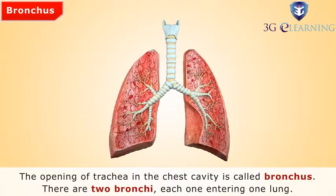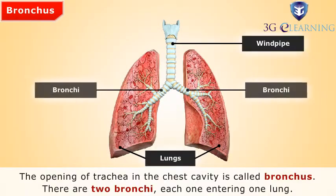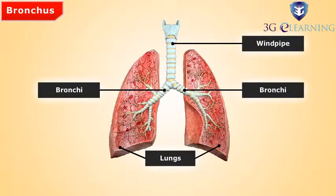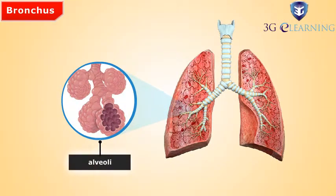Bronchus. The opening of the trachea in the chest cavity is called the bronchus. There are two bronchi, each one entering one lung. In the lung, they break into millions of tiny sacs called alveoli, which are vital for respiration. Actual exchange of gas takes place in the alveolus. A typical alveolus looks like a balloon — it inflates and deflates like one too. Human beings have lungs which have more than 16,000 alveoli, and each one is surrounded by blood vessels.